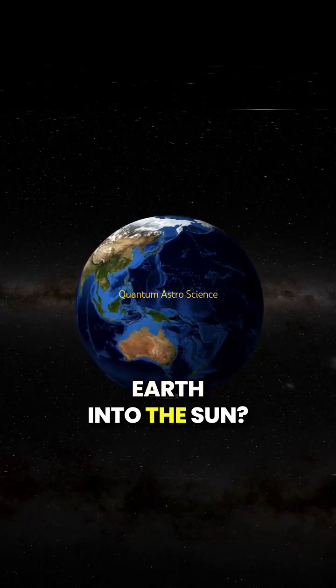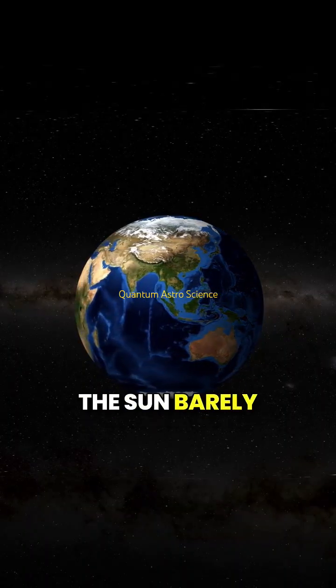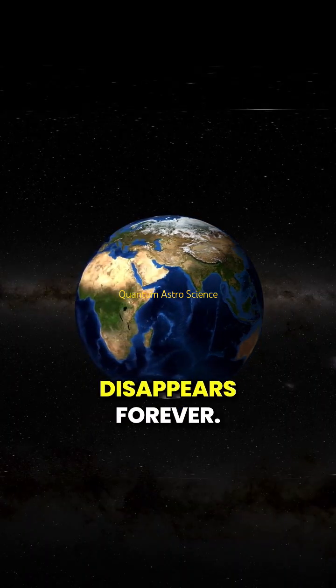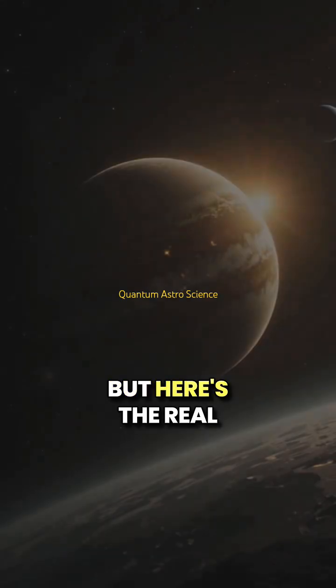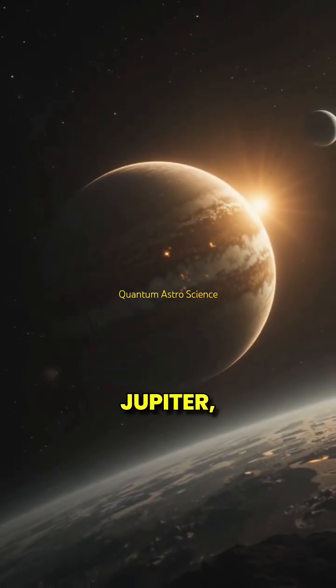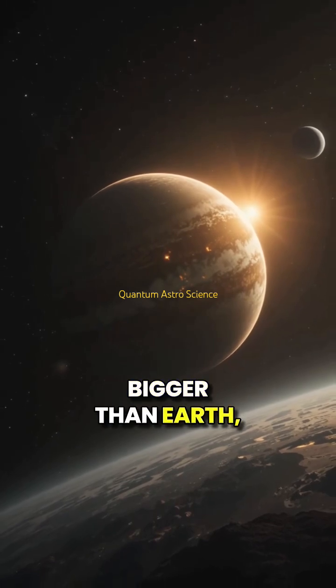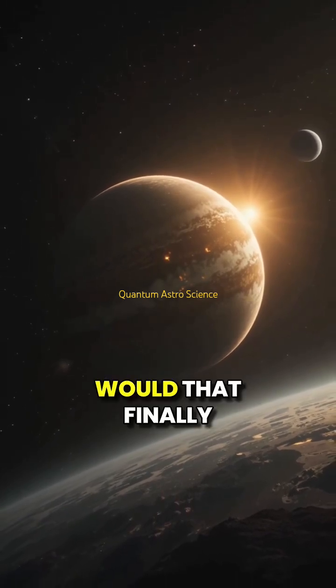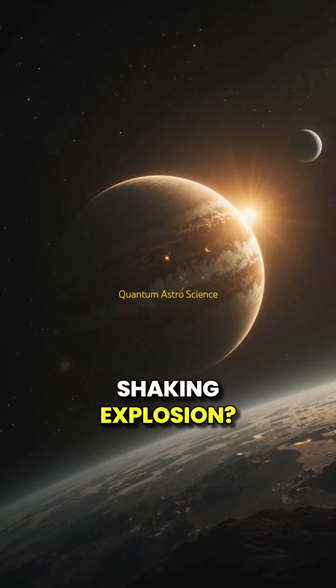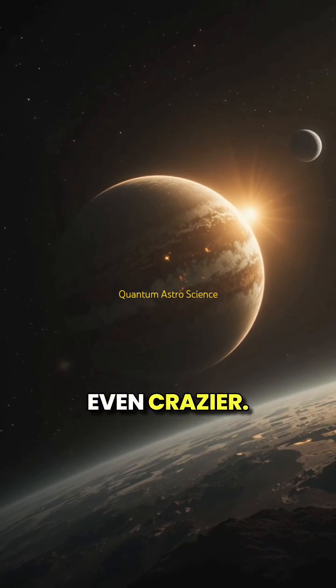So what if we threw earth into the sun? The sun barely blinks, and humanity disappears forever. But here's the real question: what if we threw Jupiter, a planet 318 times bigger than earth, into the sun? Would that finally ignite chaos, or even trigger a star-shaking explosion? The answer is even crazier.